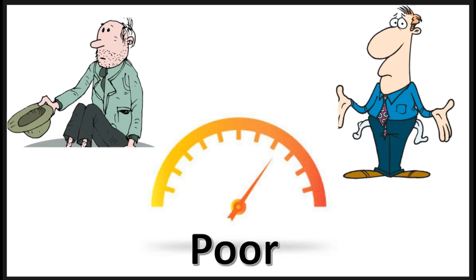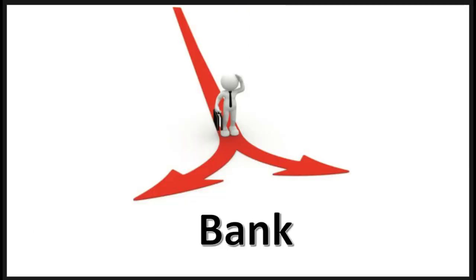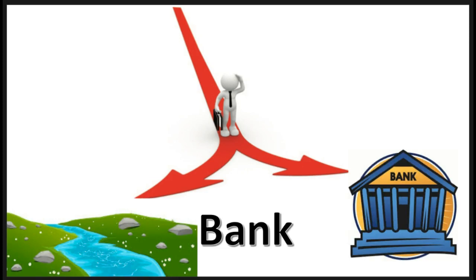The vague word 'poor' can be interpreted in degrees. Poor can mean not having a million dollars, or not having any shoes. The ambiguous word 'bank' can be interpreted in two different ways: the river bank or the Bank of America.